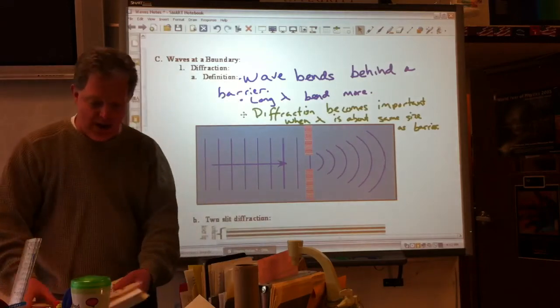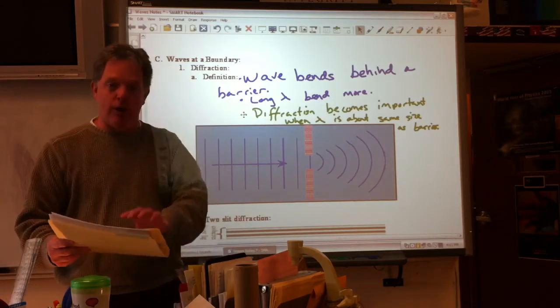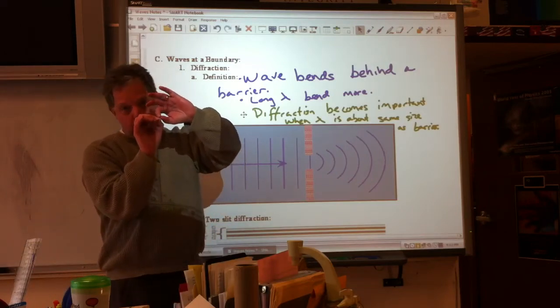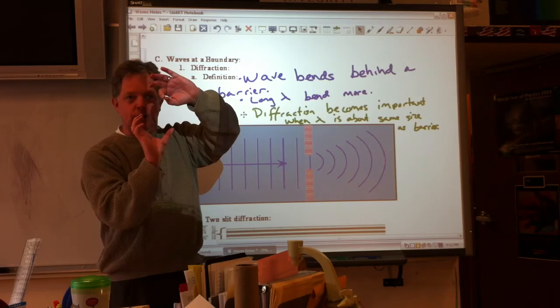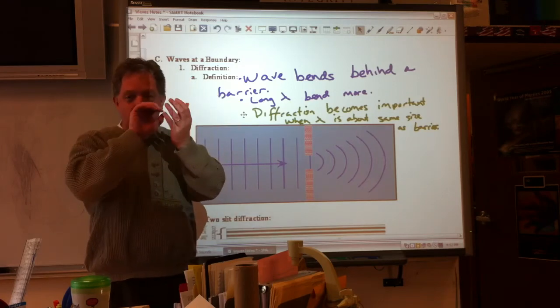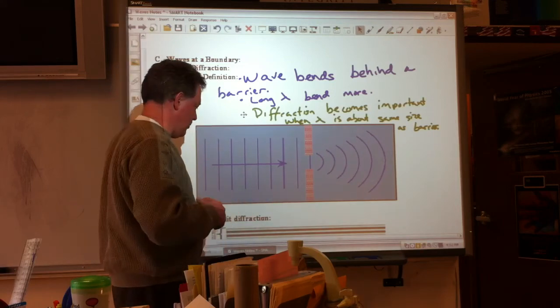So again, the sound waves are roughly the same size as this, so they can bend around. Light waves are way, way smaller. However, if I had a really small barrier, like a hair, then the light waves might be able to bend around it. Or if I had a very, very, very narrow slit, light waves can diffract through that. And we're going to see that in a lab that we're going to do.